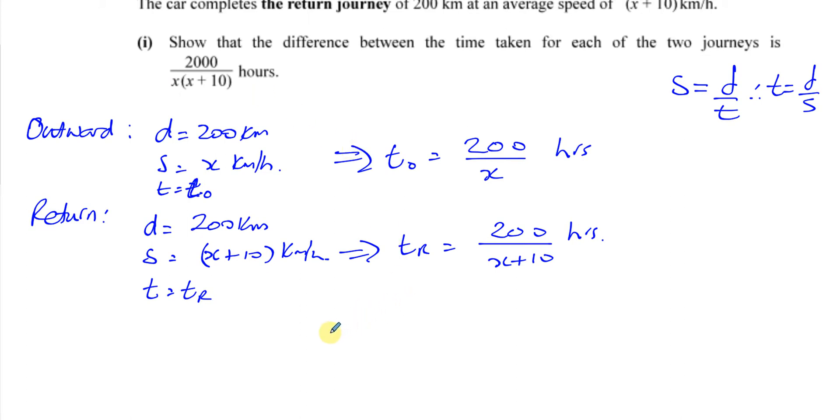So which is going to be the bigger time? It's better to put bigger minus smaller. As we mentioned, if you're going at a faster speed, the time is going to be less. So we know that the time going out must be greater than the time coming back because the speed is more, so the time is going to be less. So we know that the difference between the time going out and the time returning is going to be 200 over x minus 200 over x plus 10.